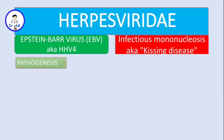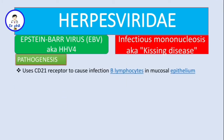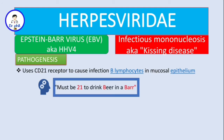This virus uses the CD21 receptor to cause infection of the B lymphocytes in mucosal epithelium, whether it's the epithelium of the oropharynx or the cervix. To remember CD21: one must be 21 to drink beer in a bar — CD21, B cell, Epstein-Barr virus. Simple.